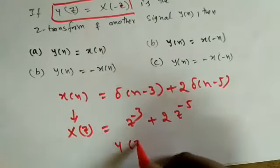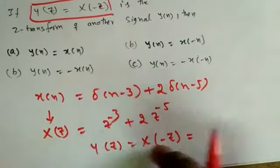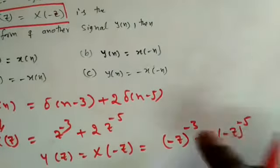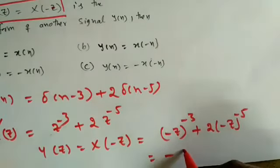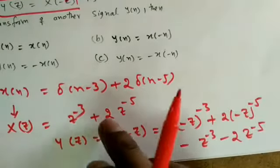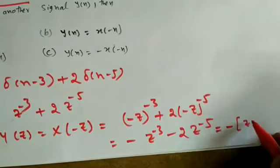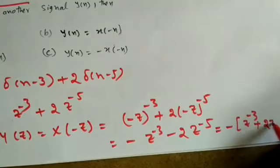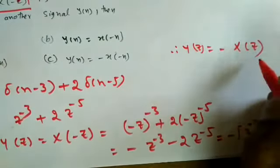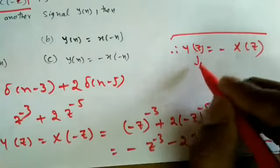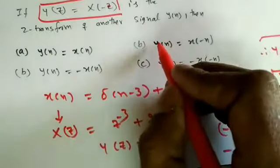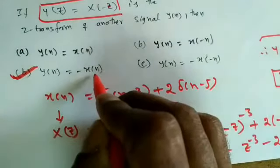Y(z) = X(−z). Substituting −z in place of z: (−z)^(−3) + 2·(−z)^(−5) = −z^(−3) − 2·z^(−5), since 3 and 5 are odd. Taking −1 common gives −(z^(−3) + 2·z^(−5)) = −X(z). Therefore Y(z) = −X(z), not X(−z). Taking the inverse Z-transform: y(n) = −x(n). Option B is correct.